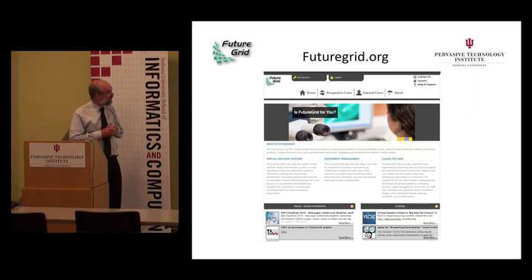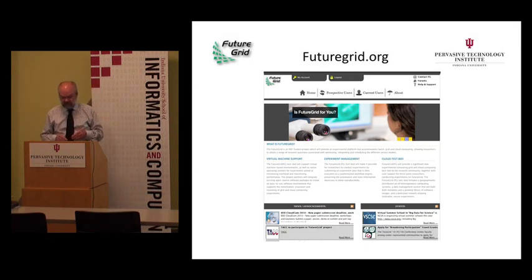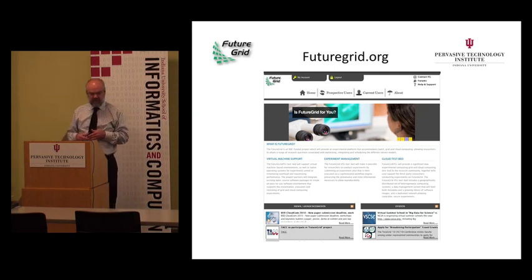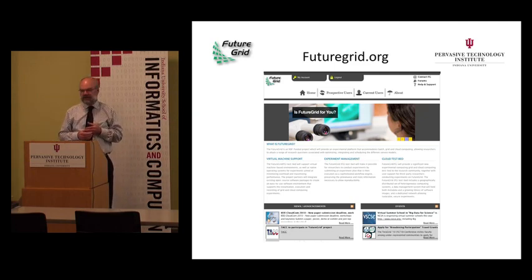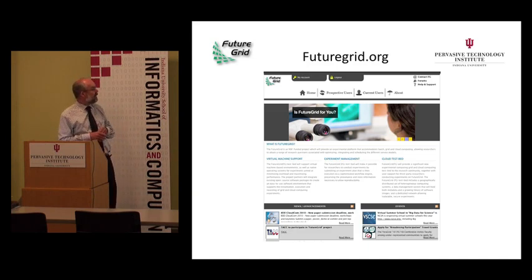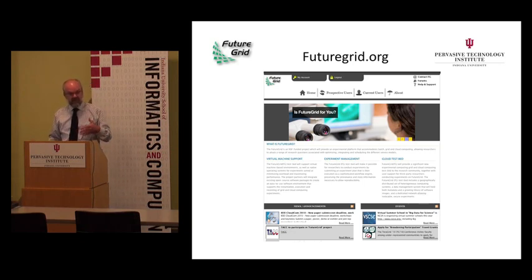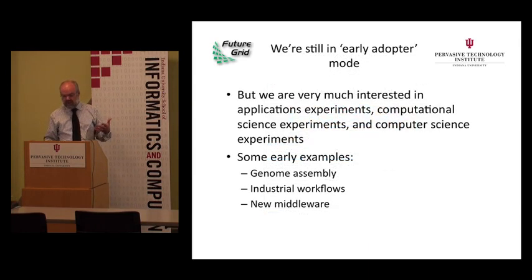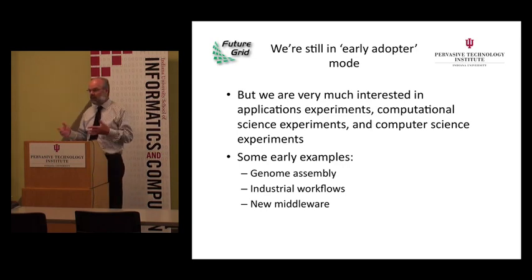The futuregrid.org website is about to get switched over to a new version. We've been going through an iterative process — something was a lot better than nothing. Version two of the FutureGrid website should be up by the end of this week, and it will be a considerable step forward in terms of what it provides. We are still very much in early adopter mode, which means we're figuring out what we need to deliver to help people use FutureGrid.